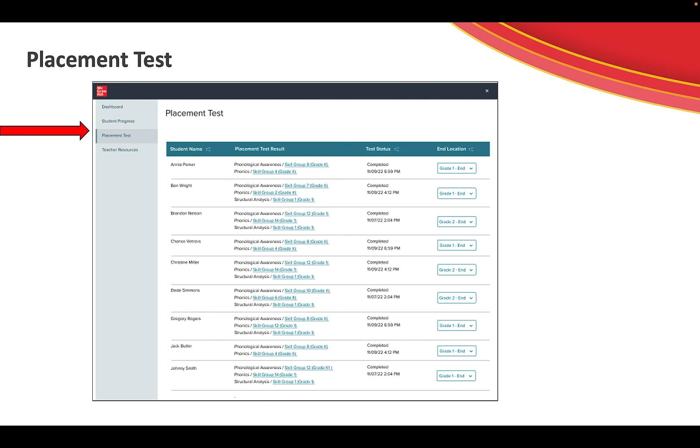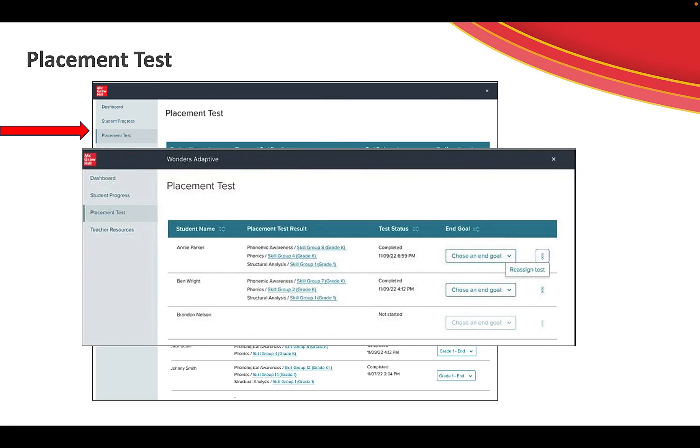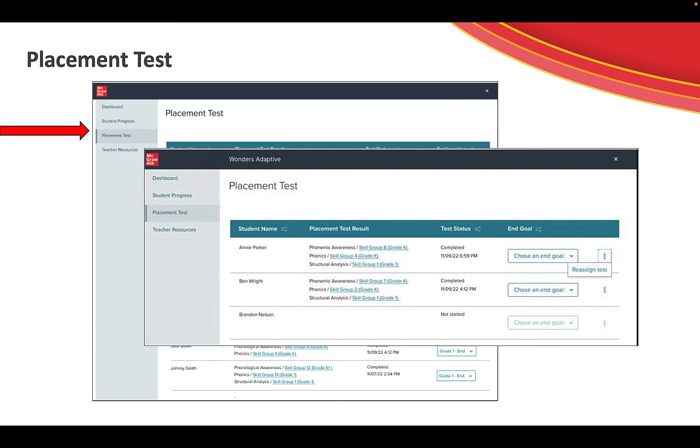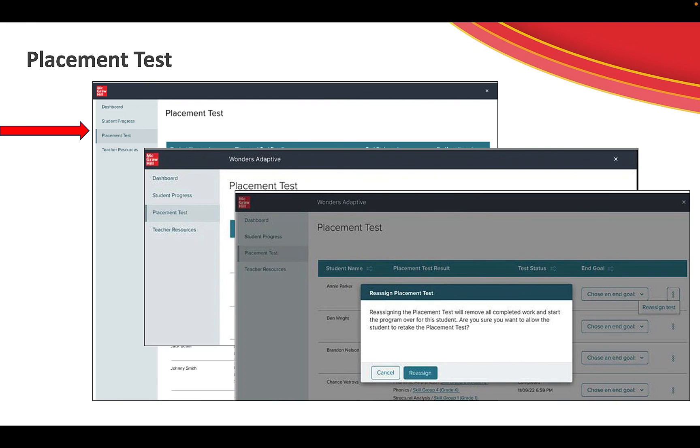Another area is the placement test screen. From here you will be able to view the results of that placement test when that test was completed and you can also select an ending location for the students to stop in these skills. It is also important that if you feel the placement test did not quite capture the results correctly and you want to reassign the placement test, you can click on those three dots to reassign the test. Be aware that when you reassign and the student is starting over with a new placement test, it will remove all completed work and it starts the program all over again for the student. So you will have this pop-up to be sure that you're wanting to reassign that placement test.